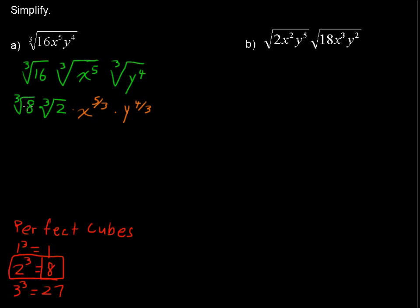Back to the numbers. The third root of 8 is 2. And I know this third root of 2 is going to be tagging along. I'm not going to be able to do anything with that. I'll just go ahead and write it. Third root of 2. And then x to the 5 thirds. Let's turn this improper fraction into a mixed number. And I'm going to make this x to the first times x to the 2 thirds. That is 1 and 2 thirds. Because when you multiply like bases, you add the exponents.